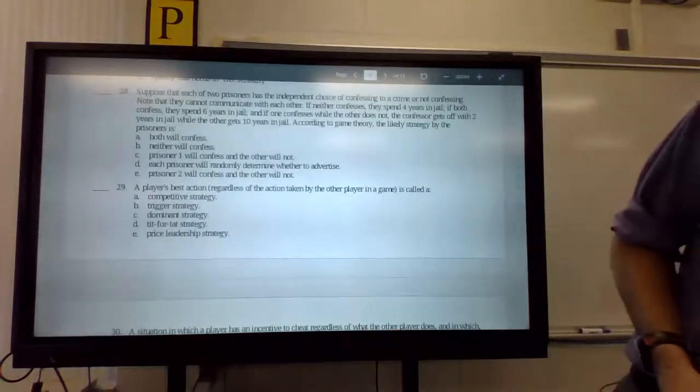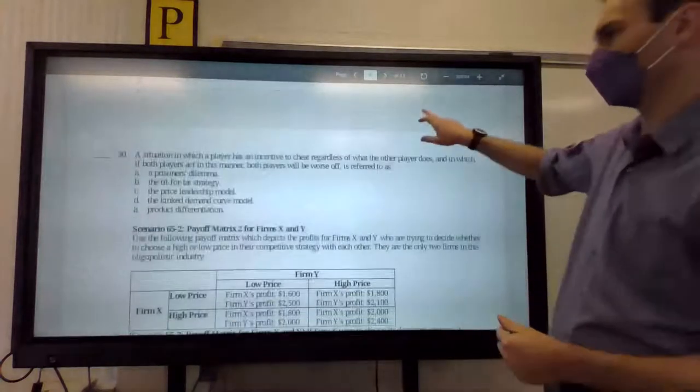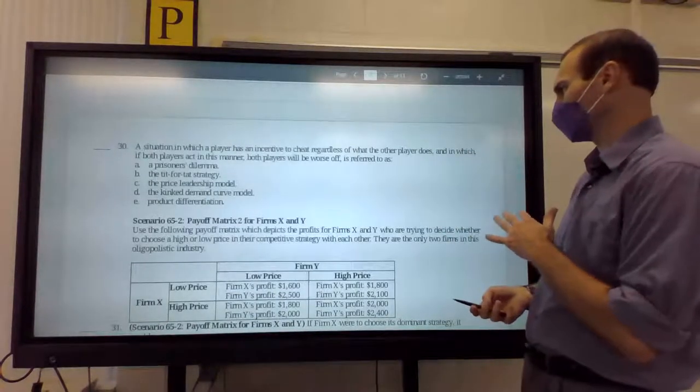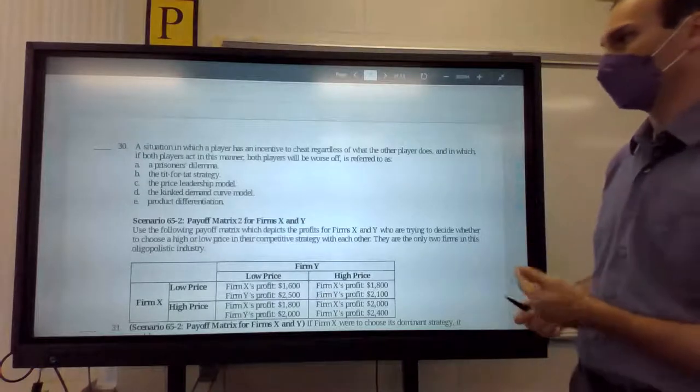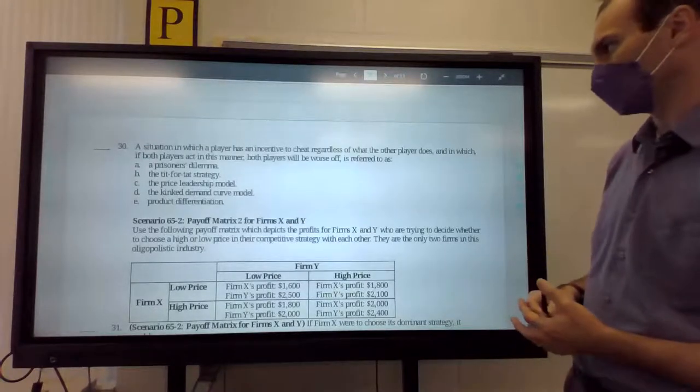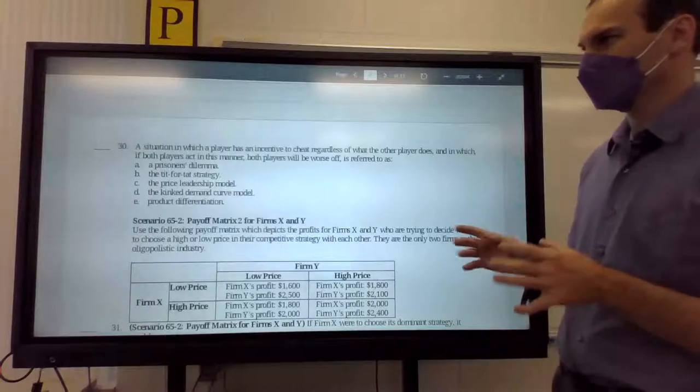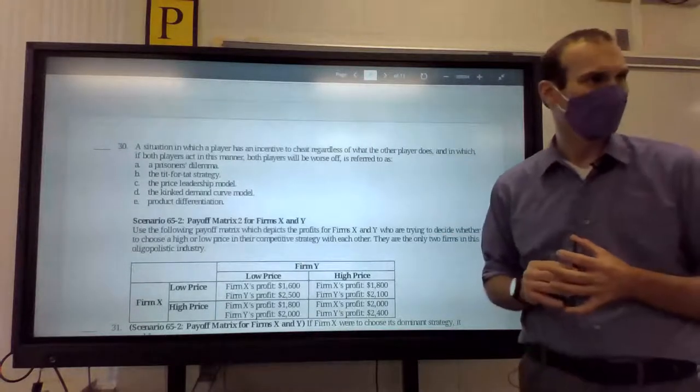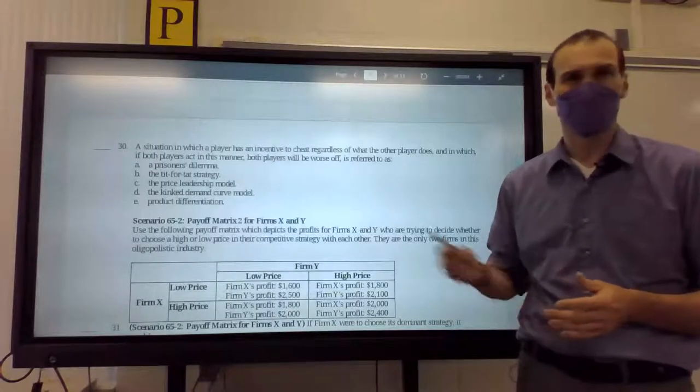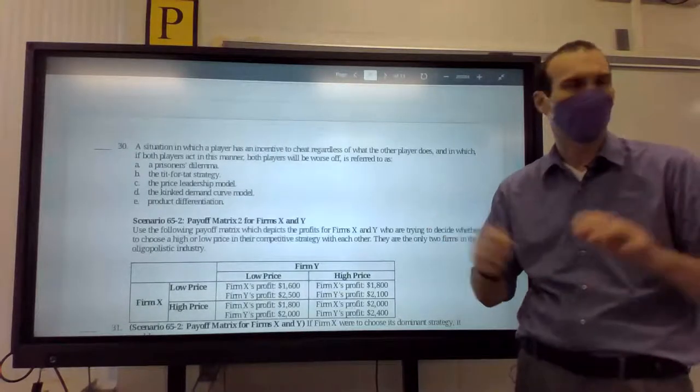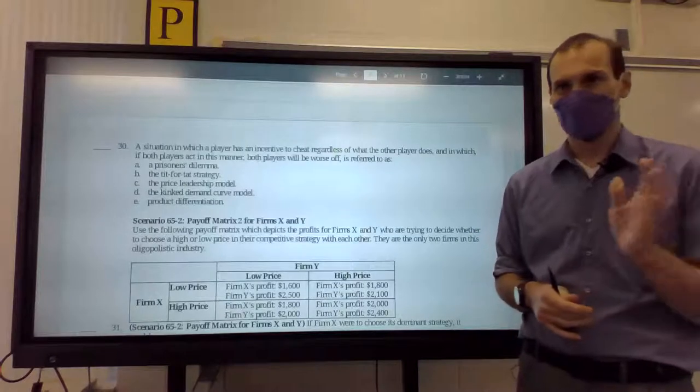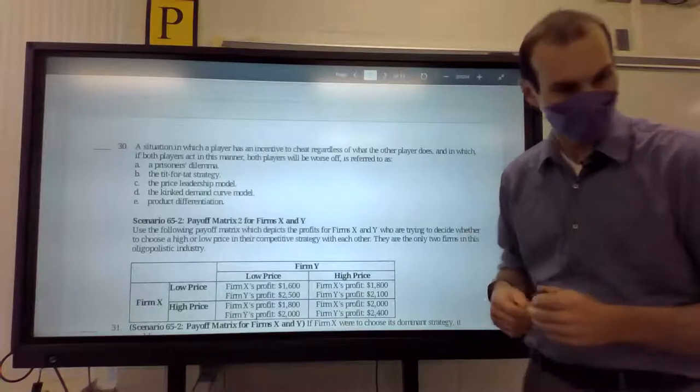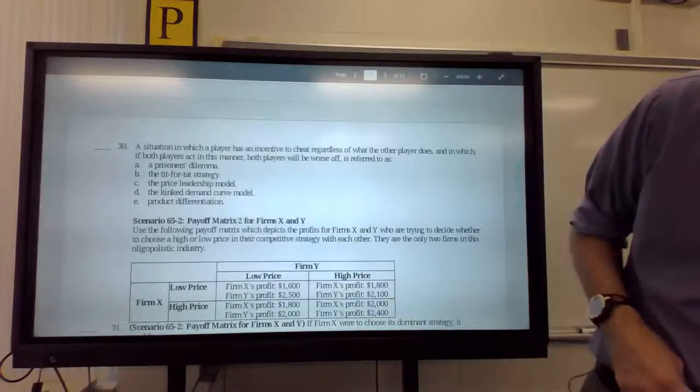All right. 28. 30. We can do this really, really quick. Okay. Situation where a player has an incentive to cheat regardless of what the other player does. And in which if both players act in this manner, both players will be worse off. It's referred to as. This really should be like tit-for-tat strategy. It's not describing tit-for-tat very well. I know the correct answer is prisoner's dilemma. So, guess what I can tell you about this question right out of hand. It's not going to be on the quiz. So, if you're stuck on this one, you have my permission to move on.